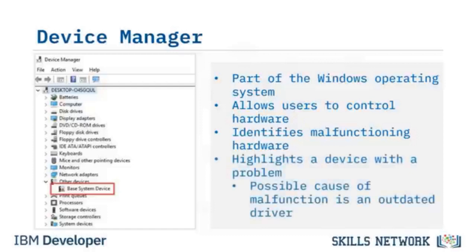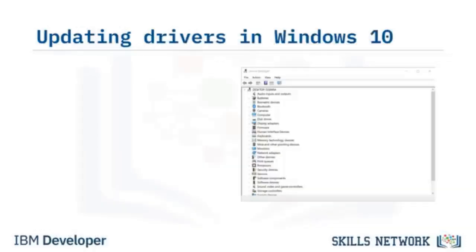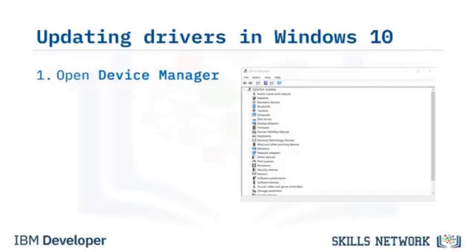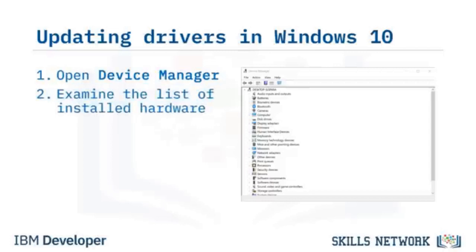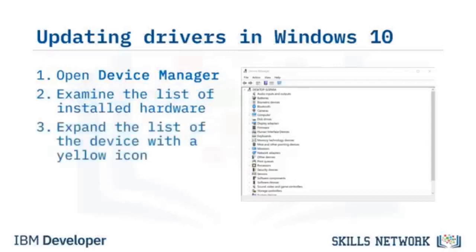One cause of device malfunction is an outdated driver. A driver is the software that allows a device to talk to the operating system. Updating the driver may restore proper function to a device. To update a device driver in Windows 10: open Device Manager by typing 'Device Manager' in the search box and selecting Device Manager. A list of installed devices will display. Click the arrow to the left of the device to expand the list.